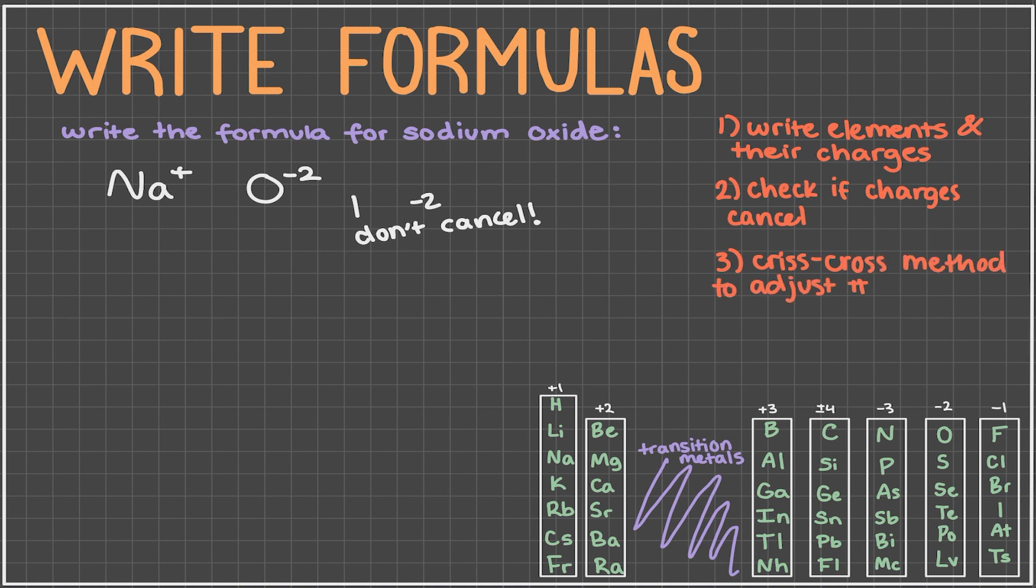A great way to do this is the criss-cross method. Take the charge of Na and bring it down here to oxygen. And take oxygen's charge and bring it to Na. We get rid of the positive and negative signs because these numbers no longer represent charge. They represent the number of atoms. So our compound now is Na2O. This means we have 2 sodiums and 1 oxygen in this compound. And this makes sense because if we multiply these 2 sodiums with its charge of 1, we get 2. And the 1 oxygen times oxygen's charge of negative 2 gives us negative 2. 2 and negative 2 cancel out, which is an indication that we did this correctly.